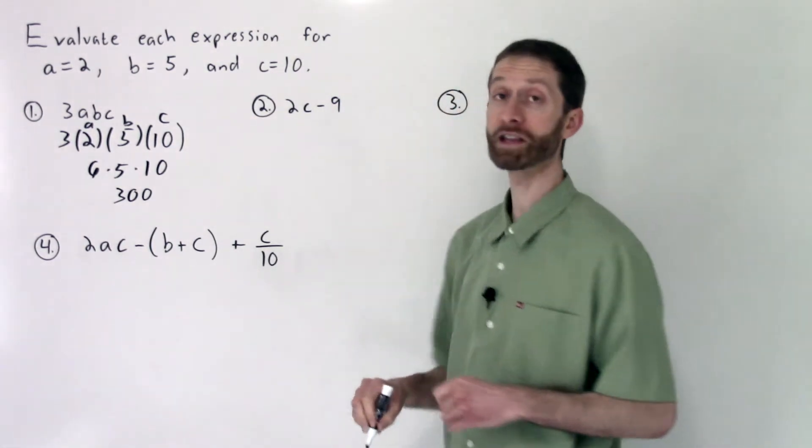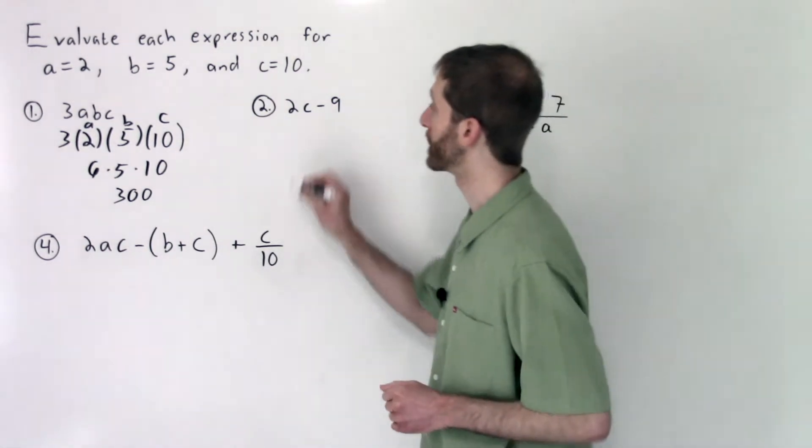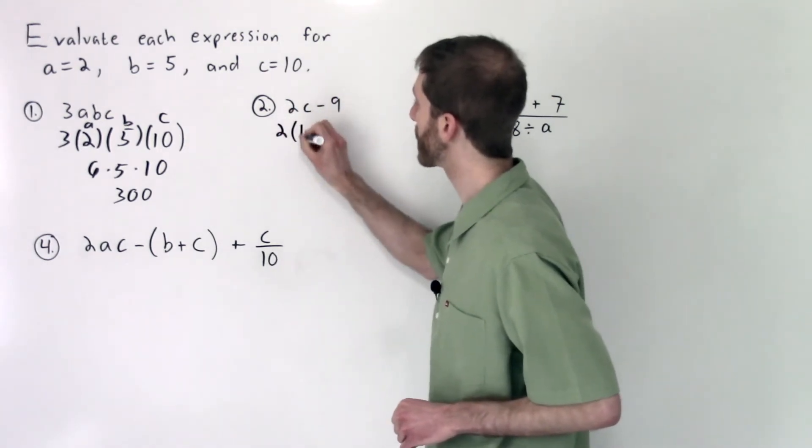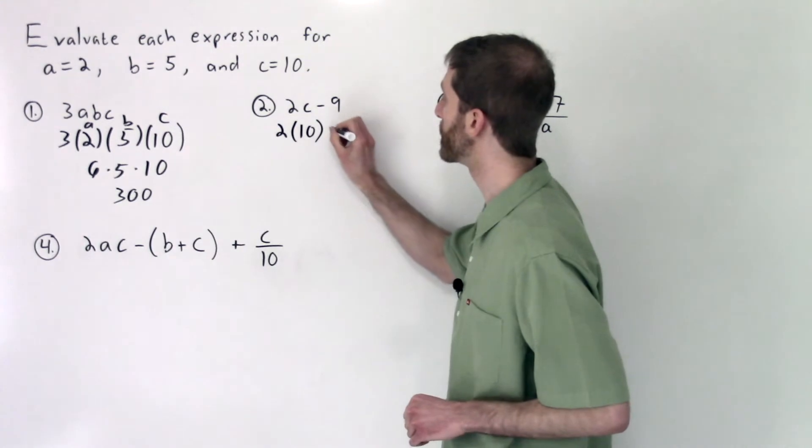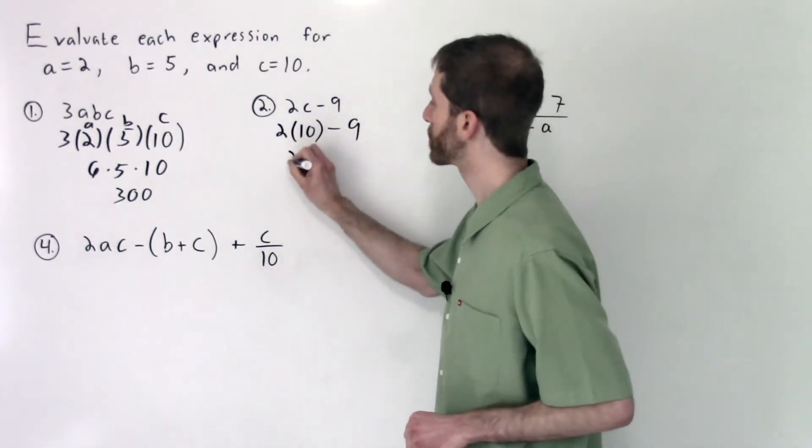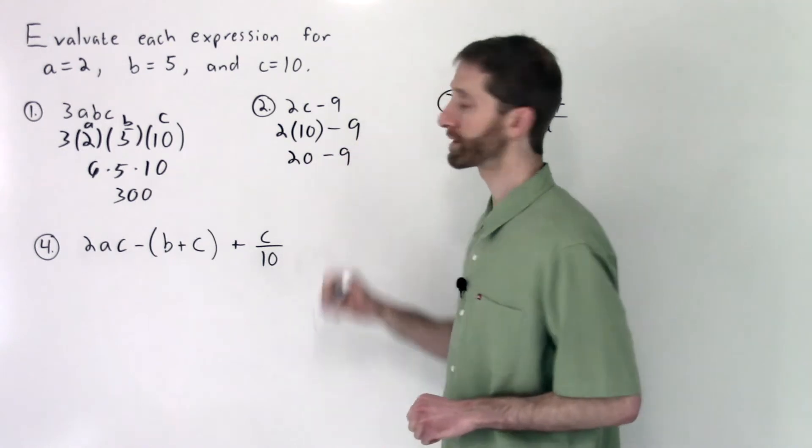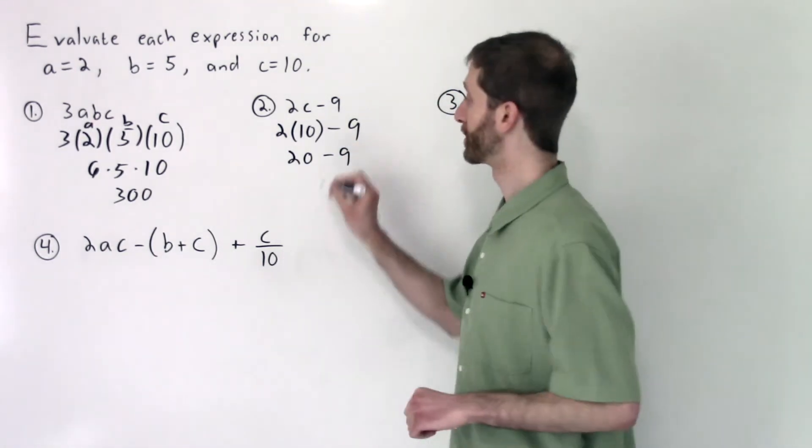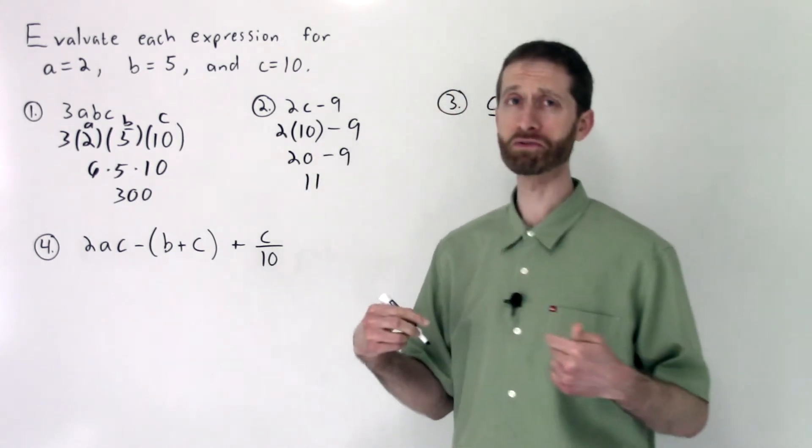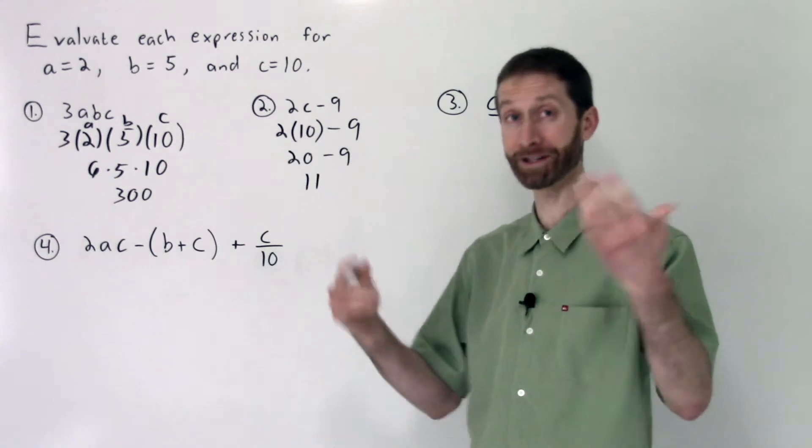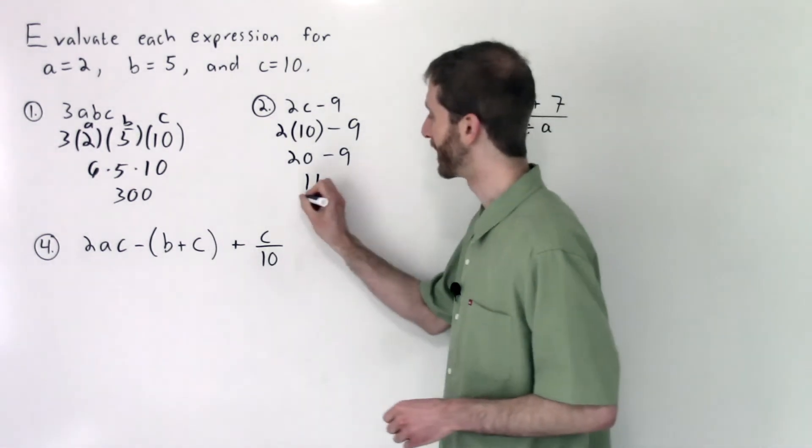Number two, we've got the expression 2C minus 9. I'm going to do 2 times 10, 10 being put in for C, minus 9. We do the order of operations now. 2 times 10 is 20, minus 9 is what we have remaining. 20 minus 9 is 11. Coincidentally, Mr. Grodin's or my favorite number. That's our answer.